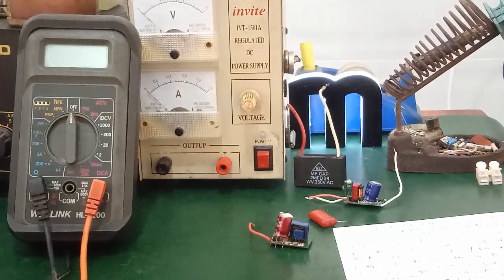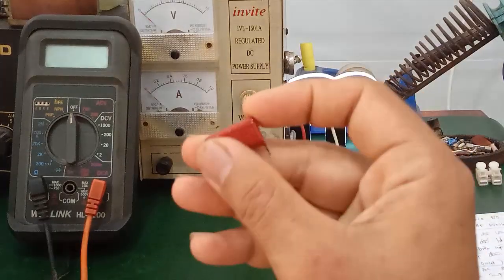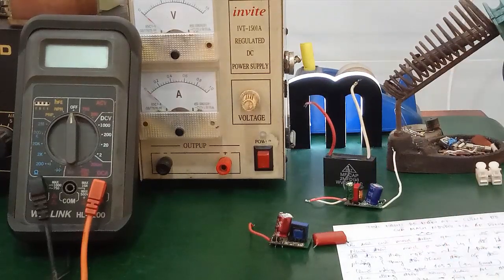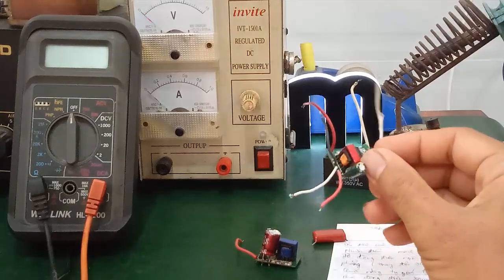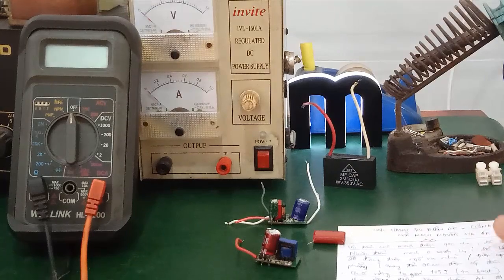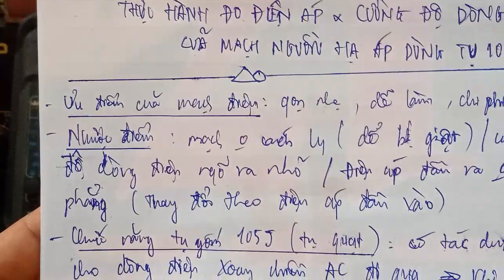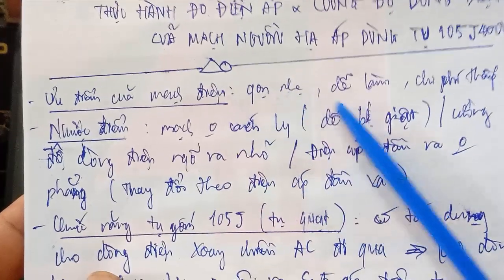Chào các bạn. Trong video này, theo yêu cầu của một bạn theo dõi kênh YouTube của mình, các bạn đã muốn biết thông số kỹ thuật của mạch hạ áp trực tiếp từ nguồn 220V dùng tụ gốm giá trị 105G hoặc tụ quạt 2MF. Ưu điểm của mạch điện là gọn nhẹ, dễ làm và chi phí thấp.